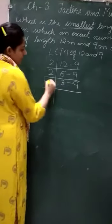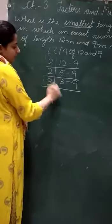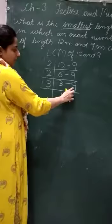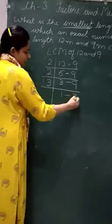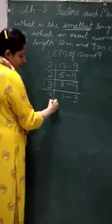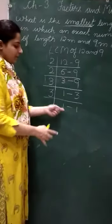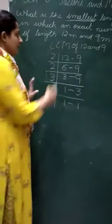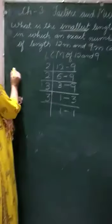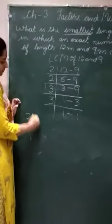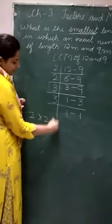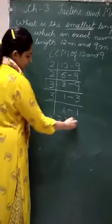Now I am taking here 3. When 3 is divided by 3 we get 1. When 9 is divided by 3 we get 3. Again I am taking 3. So now we will stop here because we have got 1. Now the LCM of 12 and 9 will be 2 multiplied by 2 multiplied by 3 multiplied by 3.